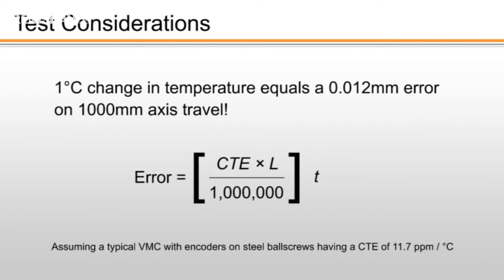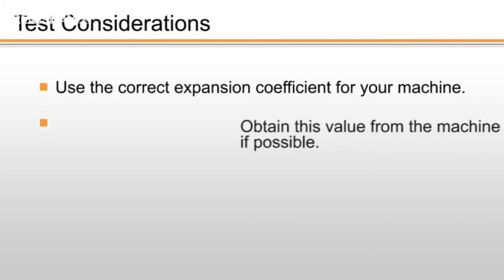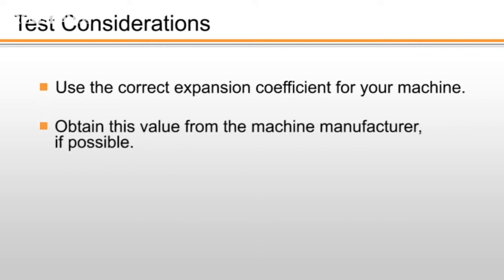This is one of the topics covered in formal training classes at Renishaw facilities around the world. A measurement error of just 1 degree Celsius is equivalent to a position error of approximately 12 microns on a 1000mm axis. It is equally important to use the correct expansion coefficient for your machine. This value should be obtained from the machine manufacturer if possible.